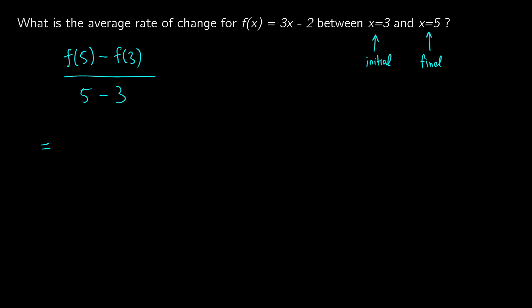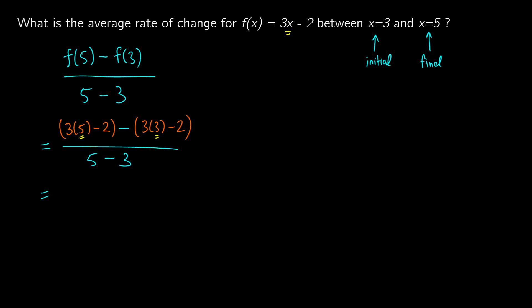Plugging values in: f of 5 is 3 times 5 minus 2, and we subtract f of 3, which is 3 times 3 minus 2. All I'm doing is putting that number in where all the x's are in our original equation, then dividing by 5 minus 3. So 3 times 5 minus 2 is 13, and we subtract 9 minus 2 which is 7. We're dividing by 2, so this is 6 over 2, which means our average rate of change is 3.